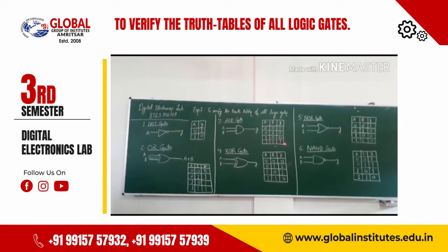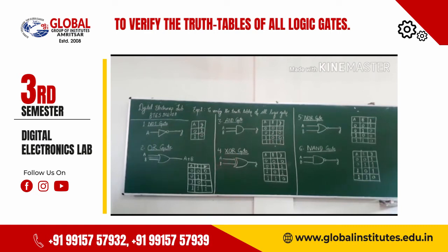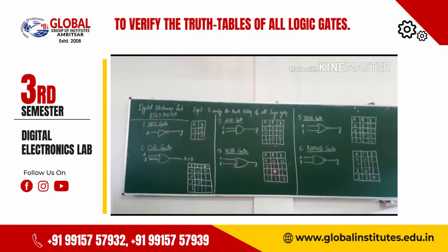Next is the XOR gate. It will produce output one when we have different input values, and will produce zero when we have same input values, either zero-zero or one-one. As given in the truth table: A zero and B zero gives Y zero, A one and B one gives Y zero. When inputs are different, A zero B one gives Y one, and A one B zero gives Y one.